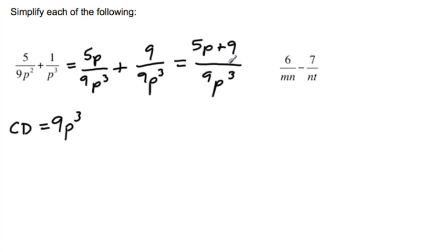As I look at my answer, I'm tempted to cancel out the nine from the nine, but I cannot. Five-p plus nine is a combined term — there's nothing that goes into both five-p and nine that will also go into nine-p-cubed. So I'll leave that as my answer.